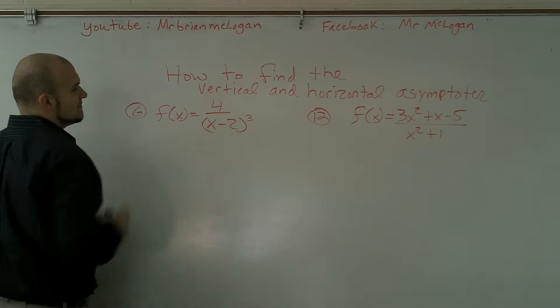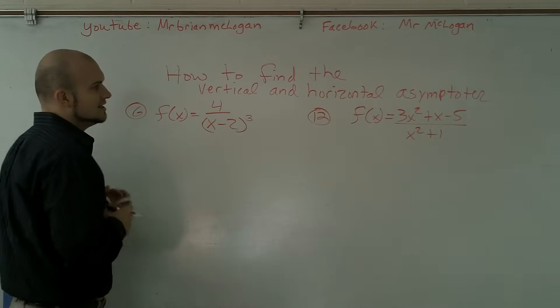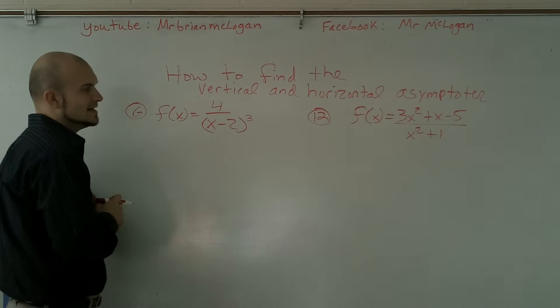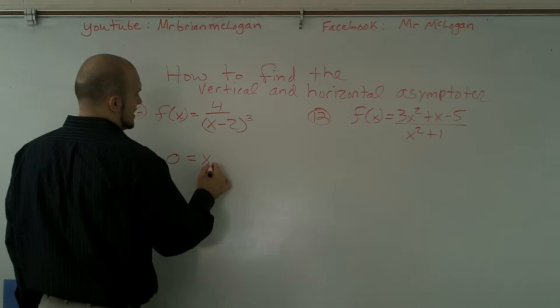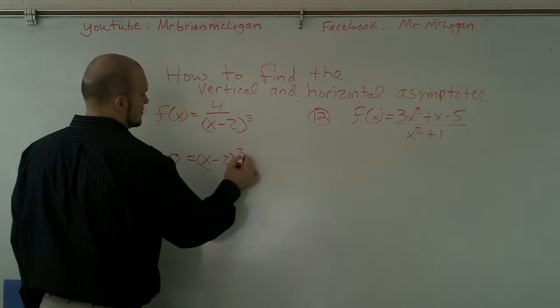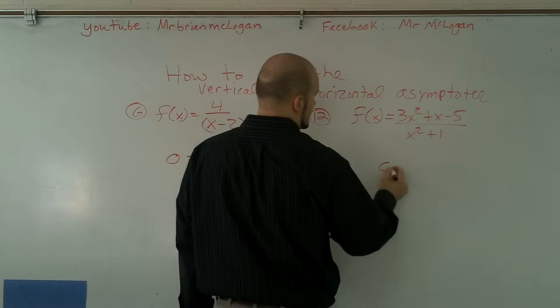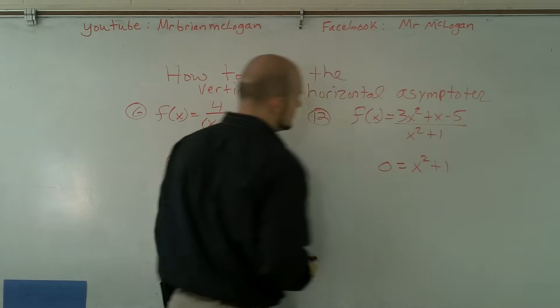What I want to do here is, if I want to find the vertical asymptote for both these equations, what I need to do is I need to set both my denominators to zero. So I just say zero is equal to x minus two cubed, and then here I get zero equals x squared plus one.